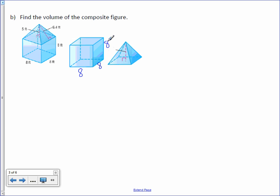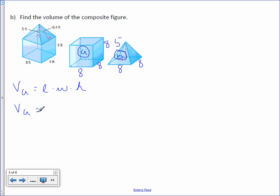Our pyramid has length and width both equal to 8, and the height is 5. We'll call the cube figure A and the pyramid figure B. Volume of A is length times width times height. Volume of A equals 8 times 8 times 8, which is 512 feet cubed.